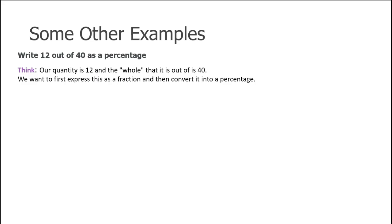Here are a couple more examples. Let's write 12 out of 40 as a percentage. We start by deciding which values are which — 12 is the quantity we want to look at, and 40 is the whole amount, giving us 12 over 40. Usually the next step is to turn our denominator into 100. We're looking at 40 and asking how we can turn that into 100. Some of you might say multiply by 2.5, which is correct, but let's keep it with simpler numbers. So let's bring 40 to something easier to work with to get to 100.